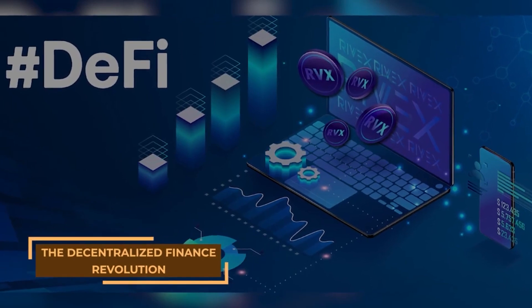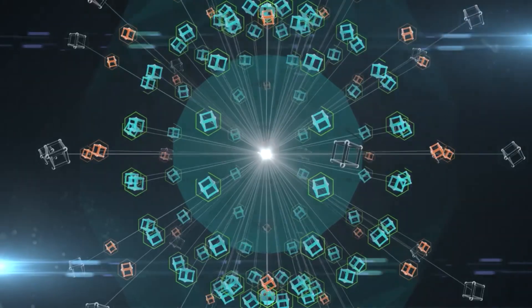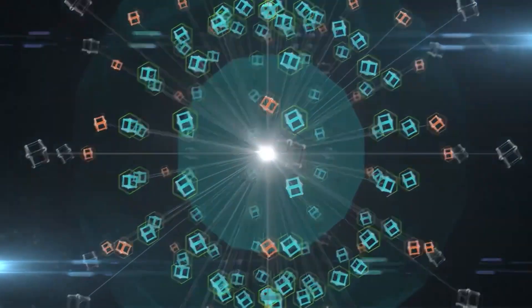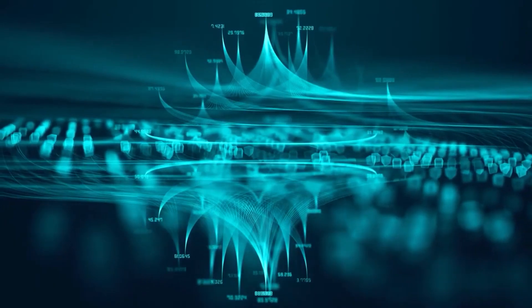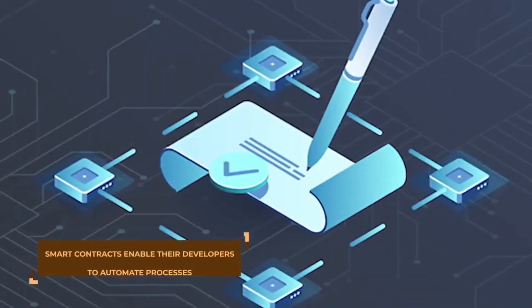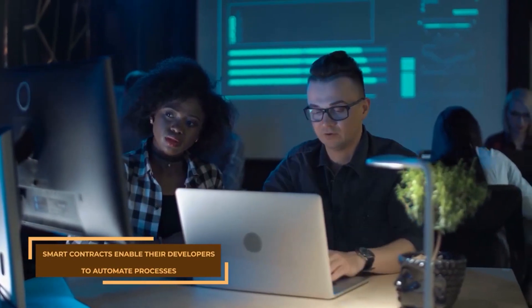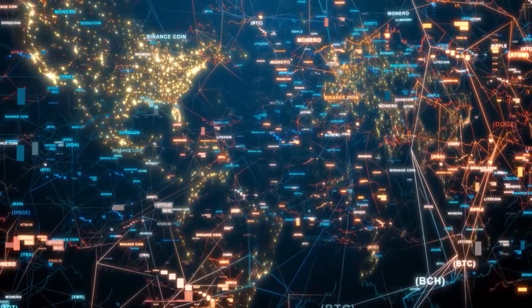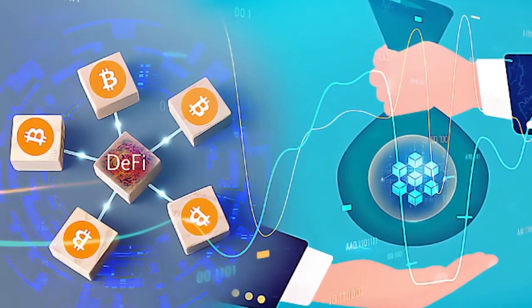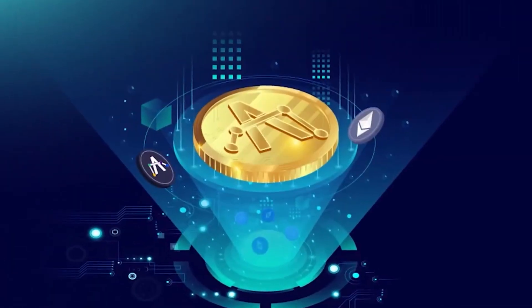Let's begin with the decentralized finance revolution. Developers can use blockchain technology to decentralize any existing matrix of banking. Furthermore, smart contracts enable their developers to automate processes. There are many possibilities in decentralized finance, such as lending, borrowing, yield farming, liquidity provision, and more.